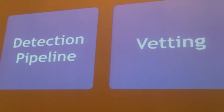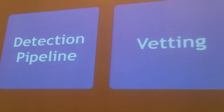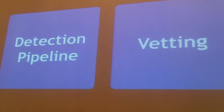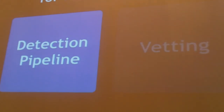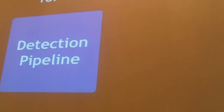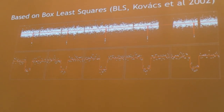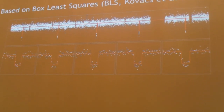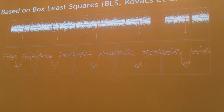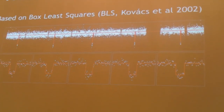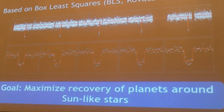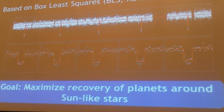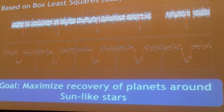There are two ingredients needed to find planets. One is a detection pipeline, and the second is a way to vet the signals we detect. For the detection pipeline, we use box least squares — most people doing transit searches will be aware of this algorithm. We tune our pipeline to maximize the recovery of planets around Sun-like stars.